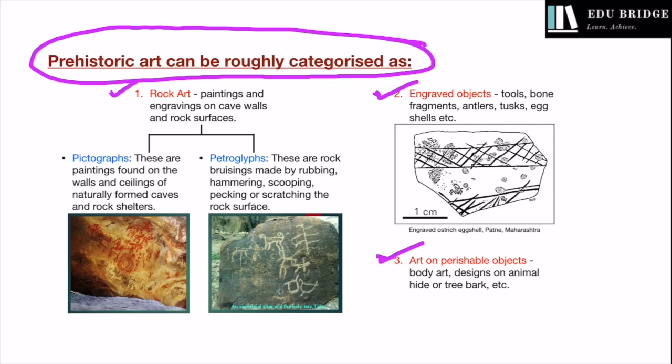We don't have physical evidence of art on perishable objects — no such artifacts have been found. We know that these people used to practice body art or made designs on animal hide or tree bark because such practices are done by tribes who are still living in a prehistoric mode of life, for example, the Jarawas of Andaman and Nicobar. However, we have found paintings in the Bhimbetka rock shelters.